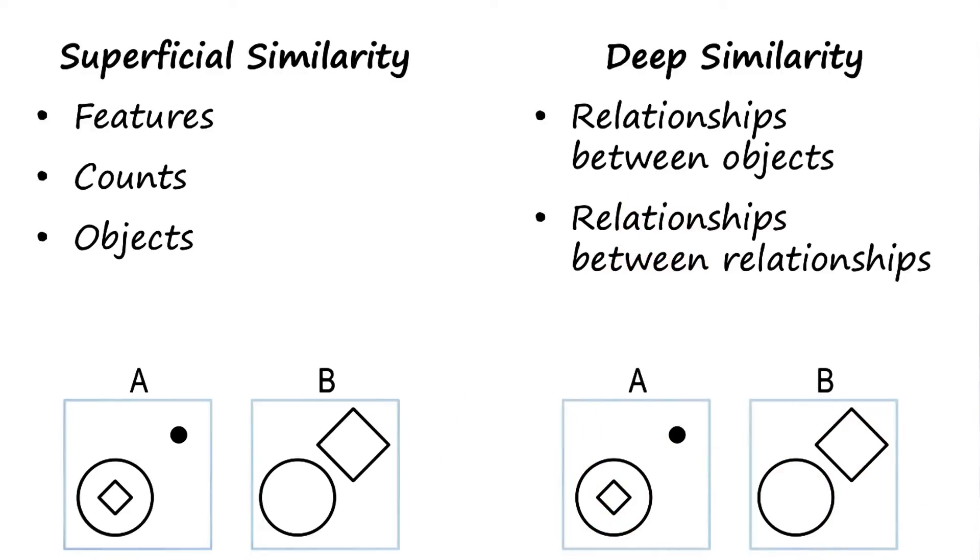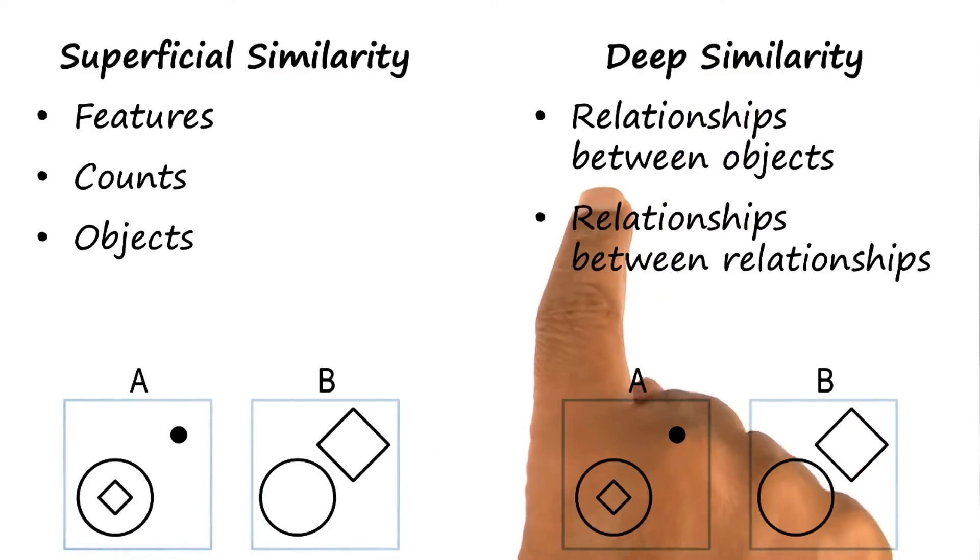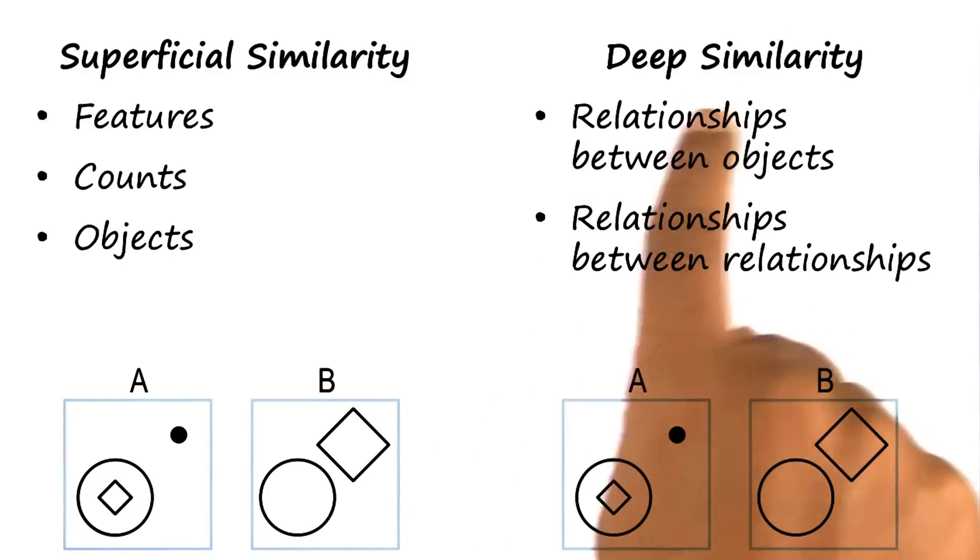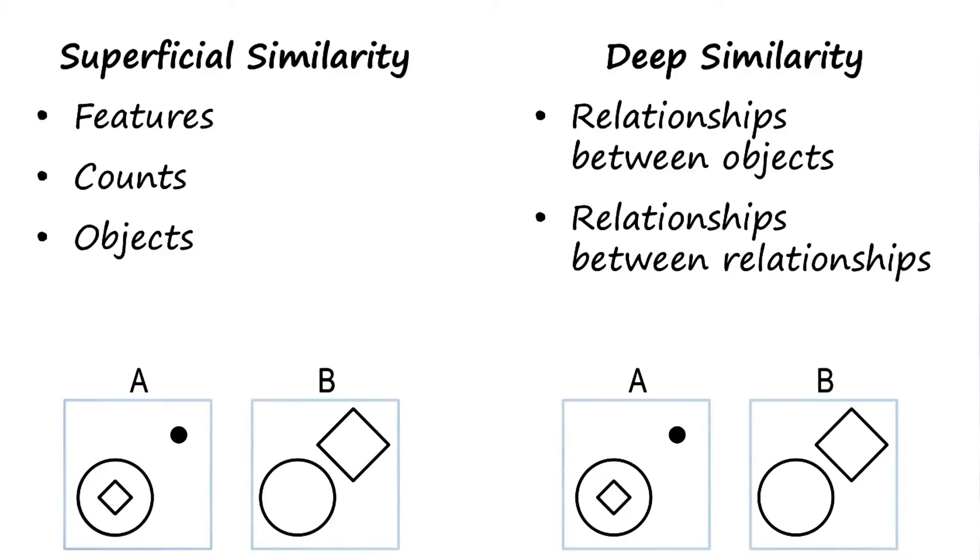Let us look at relationships between objects. Two situations are said to be deeply similar if the relationship between the objects is similar. As an example, A and B are similar, in that the dot is outside the circle here, and the square is outside the circle here.